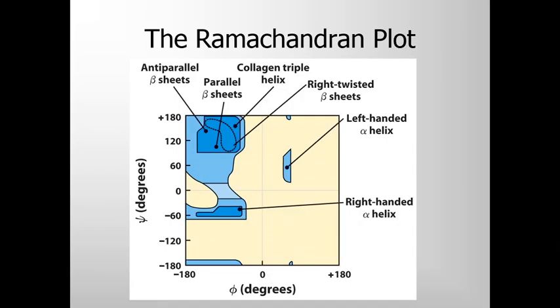We end our lecture by looking at the Ramachandran plots showing a variety of secondary structural elements. A right-handed helix usually falls in the lower left-hand quadrant. Anti-parallel beta sheets, parallel beta sheets, and right-twisted beta sheets, including collagen triple helices, form in the top left-hand quadrant. A typical exception is a left-handed helix, which forms in the top right-hand quadrant. Although left-handed helices are not known to exist in proteins, they are theoretically possible.